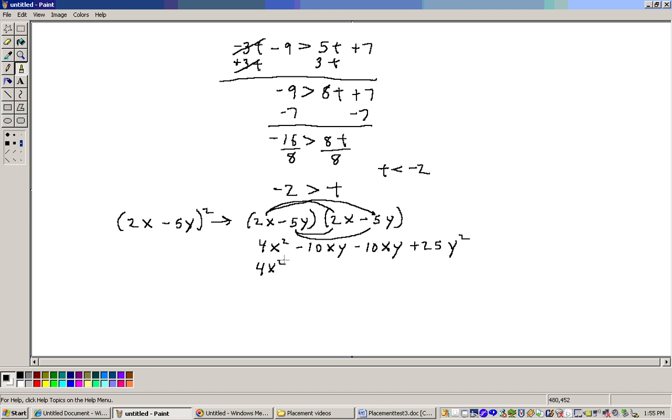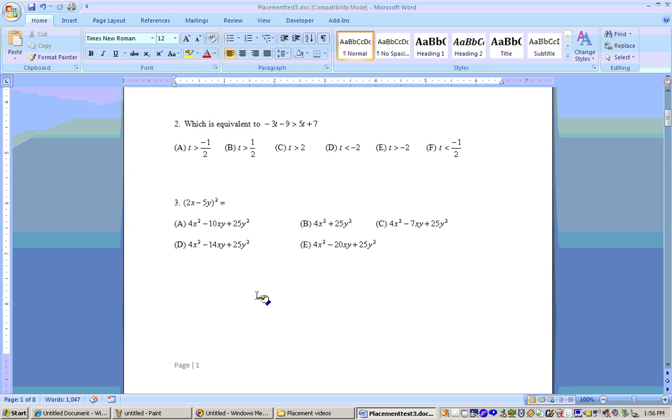Now combine your like terms and we get 4x squared minus 20xy plus 25y squared. If we check to see what answer that is, I think it's answer E. So the correct answer would be E.